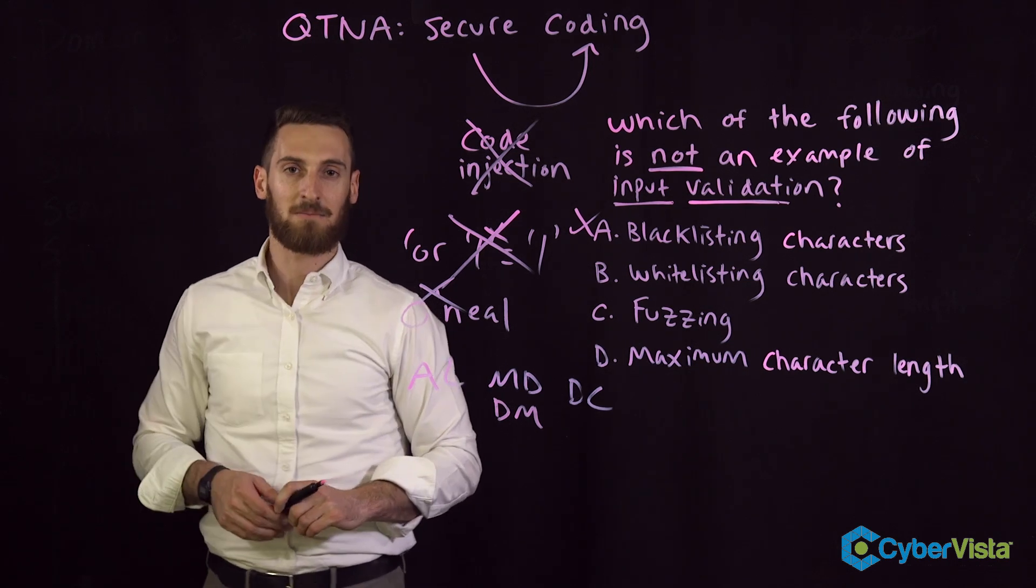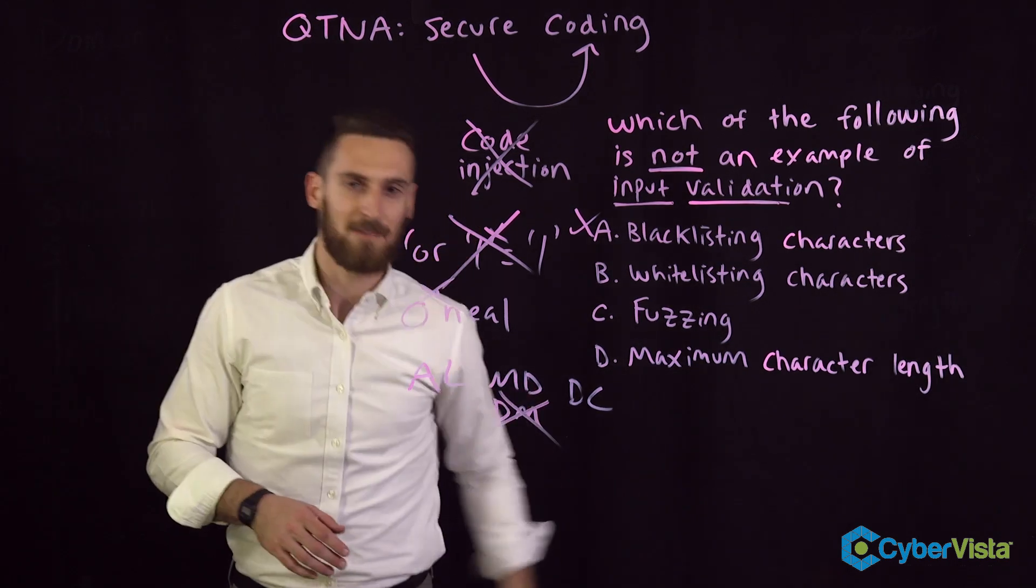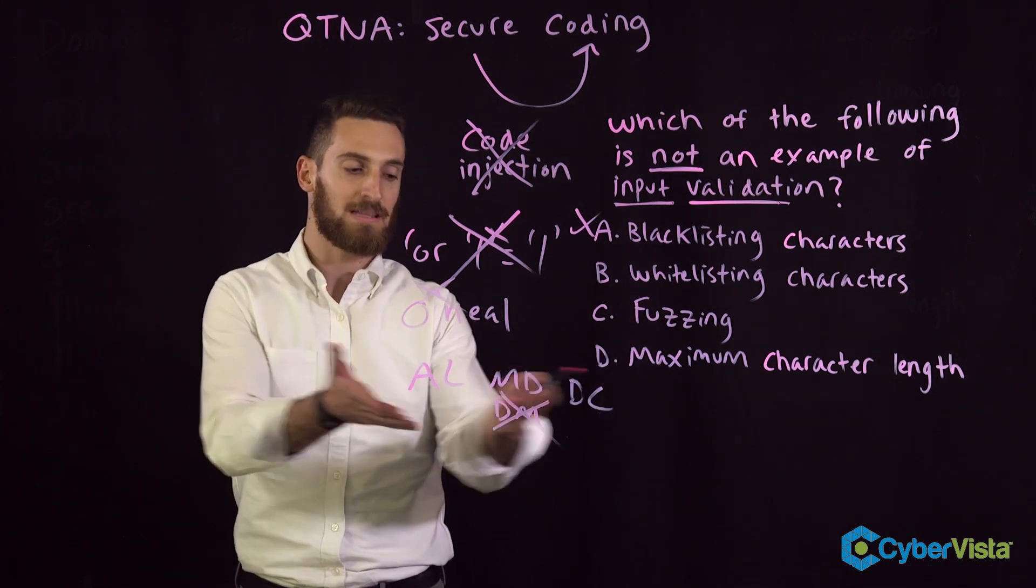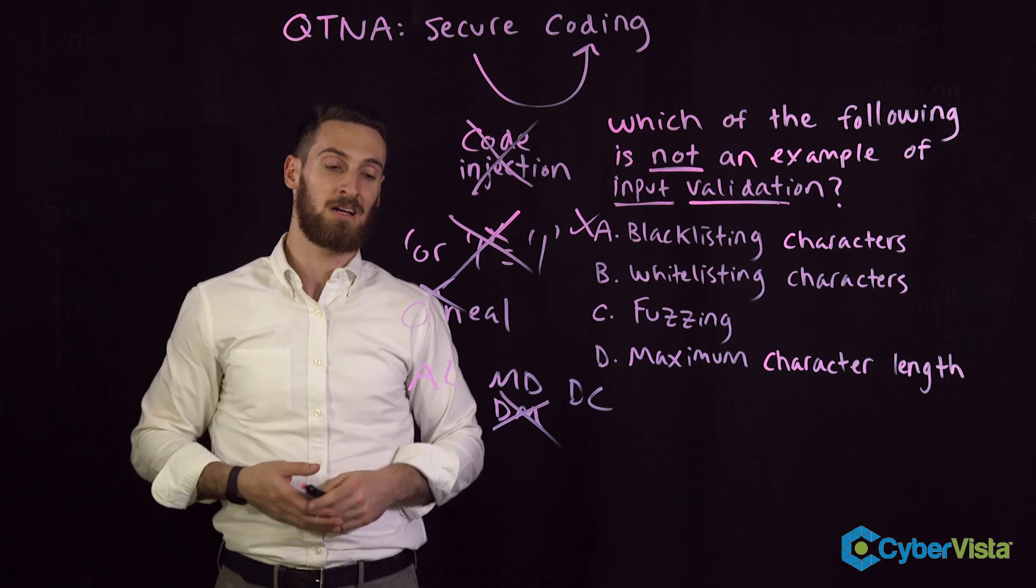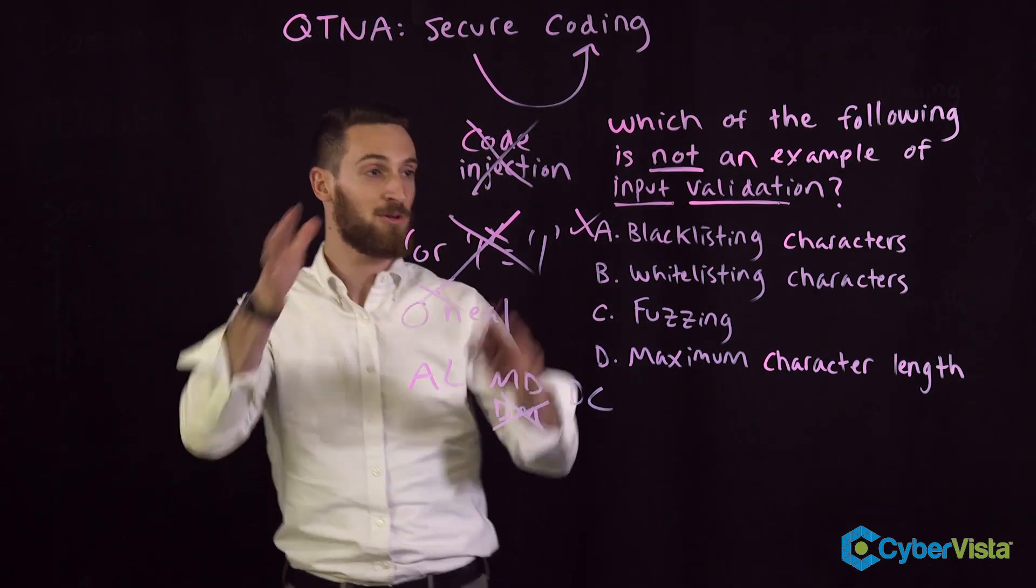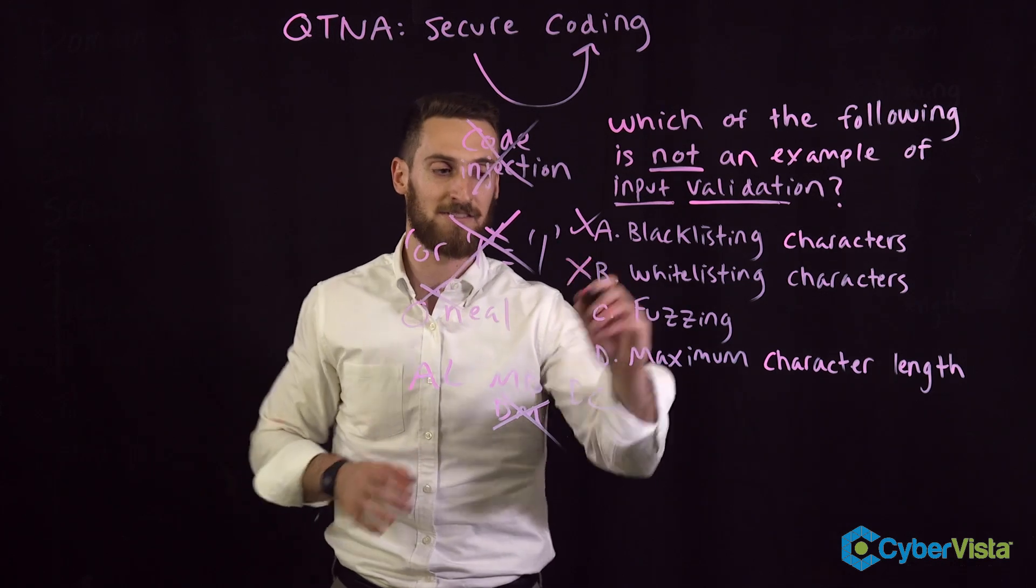Anything outside of that, not going to happen. Even if you mess up slightly and write DM instead of MD - DM me by the way - we're going to block it. That is whitelisting because we're allowing only specific things that we know to be good and true. Whitelisting, very good example of input validation. That's not the right answer.